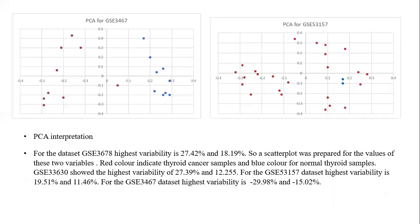For PCA interpretation, for dataset GSE3678, the highest variability is 27.42% and 18.19%, and a scatterplot was prepared for those data variables, where red color indicates thyroid cancer samples and blue color indicates normal thyroid samples. GSE33630 showed the highest variability of 27.39% and 12.25%. For GSE53157, the highest variability is 19.51% and 11.46%. For GSE3467, the highest variability is 29.98% and 15.0%.